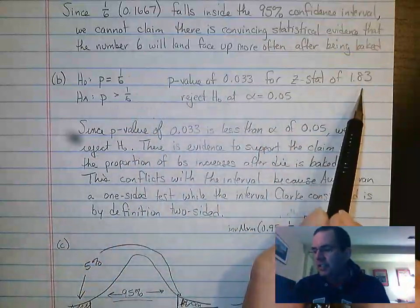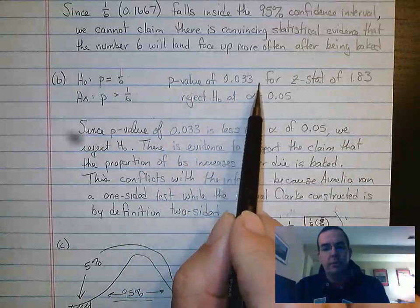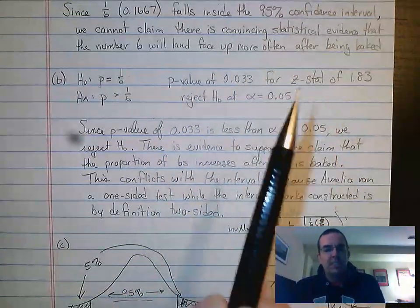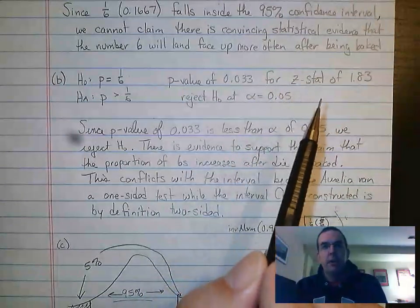When she did that, she got a Z statistic of 1.83, she got a p-value of 0.033. And then they ask the question about what decision would you make at a significance level of 0.05.